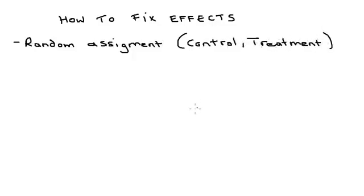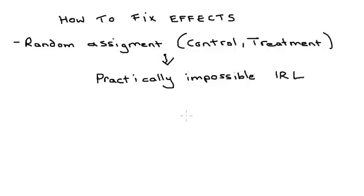It sounds simple, but in real life it's difficult or impossible to randomly assign participants or treatments. So these variables, like age, must be measured instead.